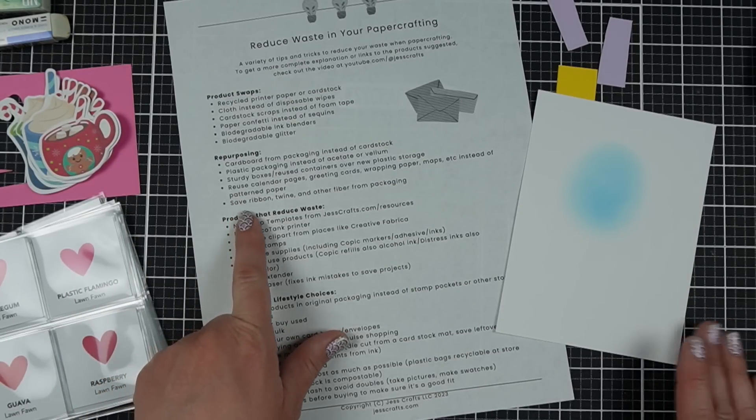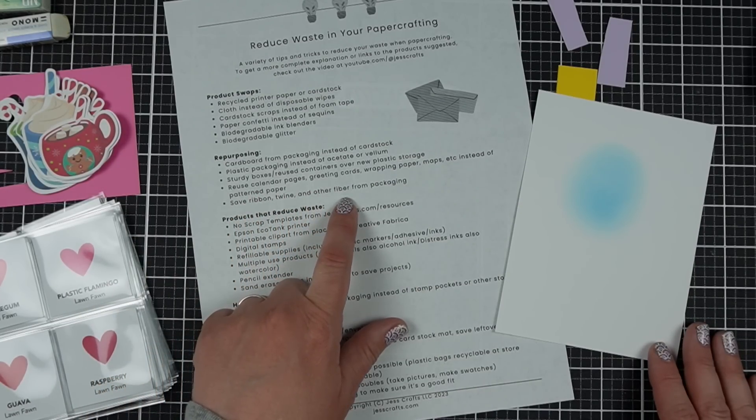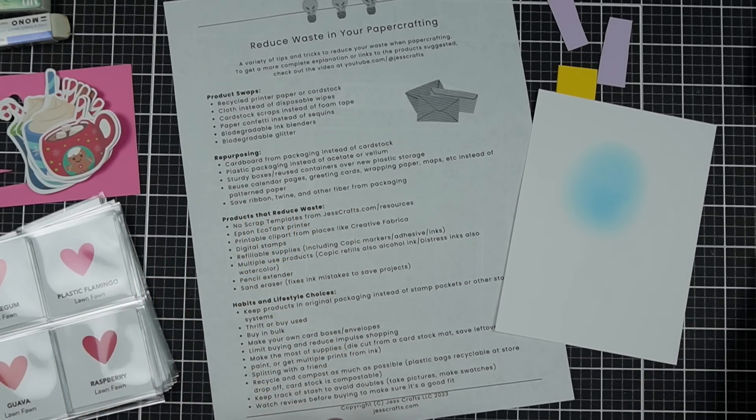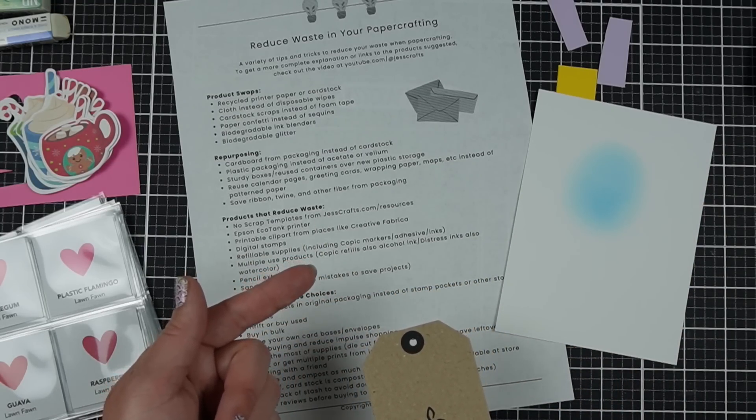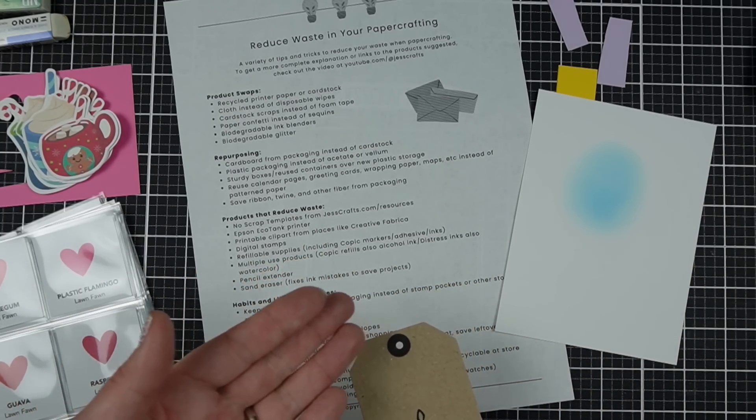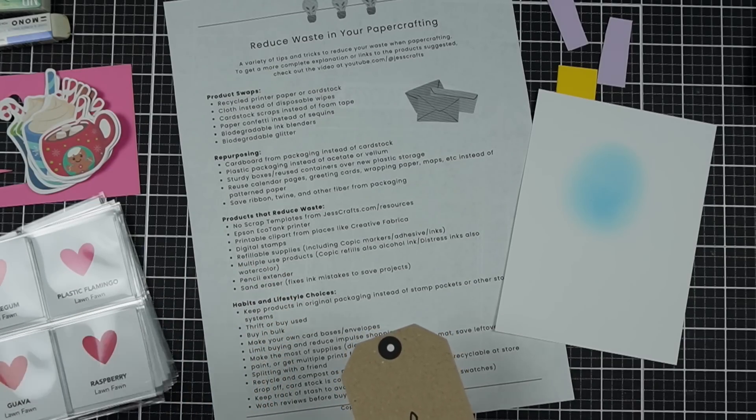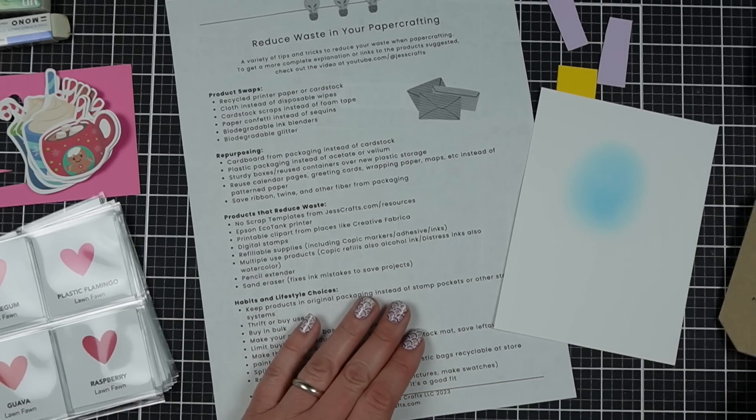So saving ribbon, twine, and other fibers from packaging. So again, just take another look at your packaging. A lot of times tags on clothing, they'll come with like a little string attached. And when you're just trying to put the same thing on like a tag on your card, you just need a little bit of string. They can really come in handy.